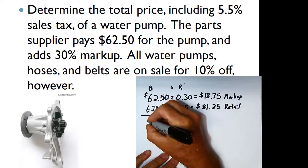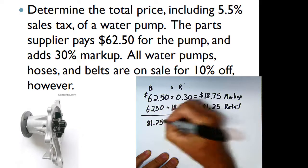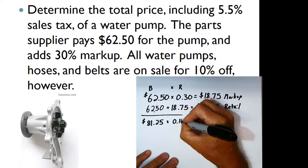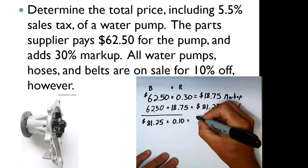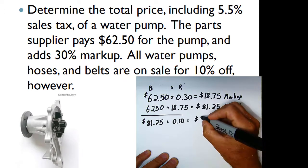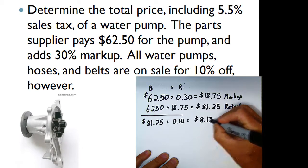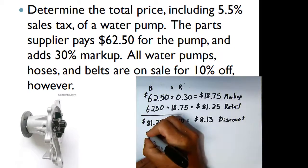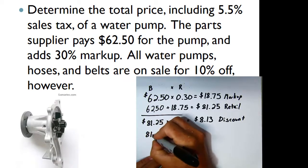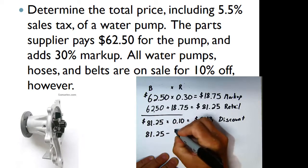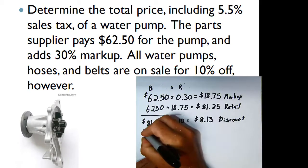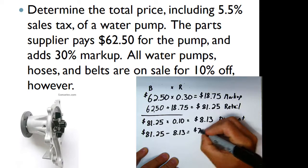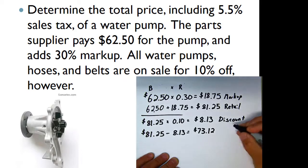We take the base of $81.25 and multiply by the discount rate of 10%, which gives us $8.13 when rounded to the nearest penny. That's the amount of our discount. Since this is a sale, we subtract: $81.25 − $8.13 = $73.12, and that's our sale price.